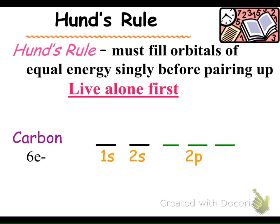Hund's Rule tells us we must fill orbitals of equal energy levels singly before pairing up. We like to say we prefer to live alone first. Hund's Rule kind of sounds like Attila the Hun — we never want to live with Attila the Hun. I like to represent orbitals like twin beds, and at the p orbital we have three twin beds, which is where living alone first becomes important.